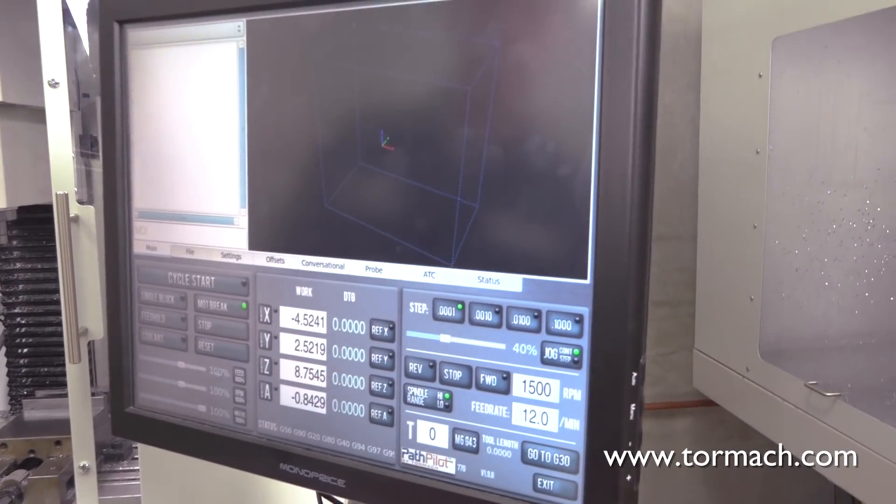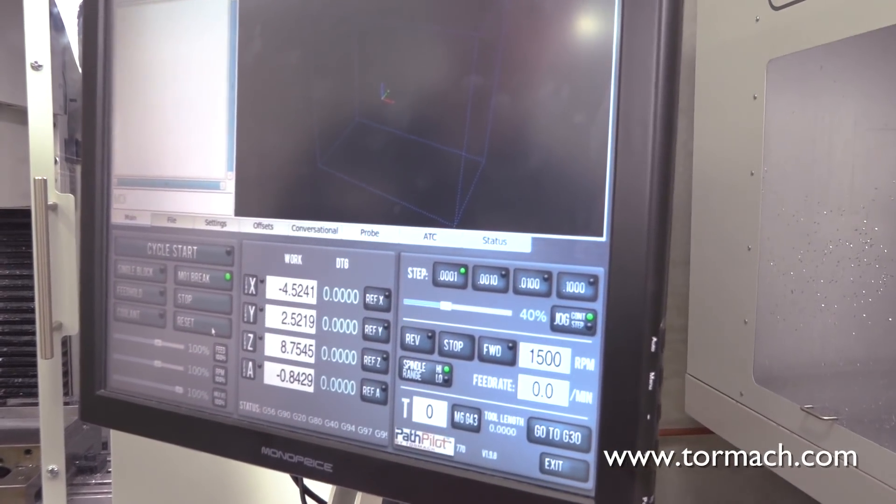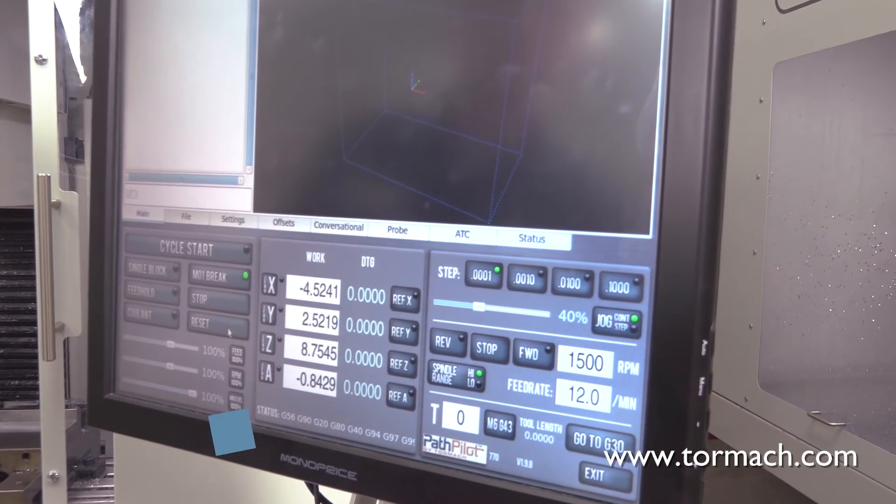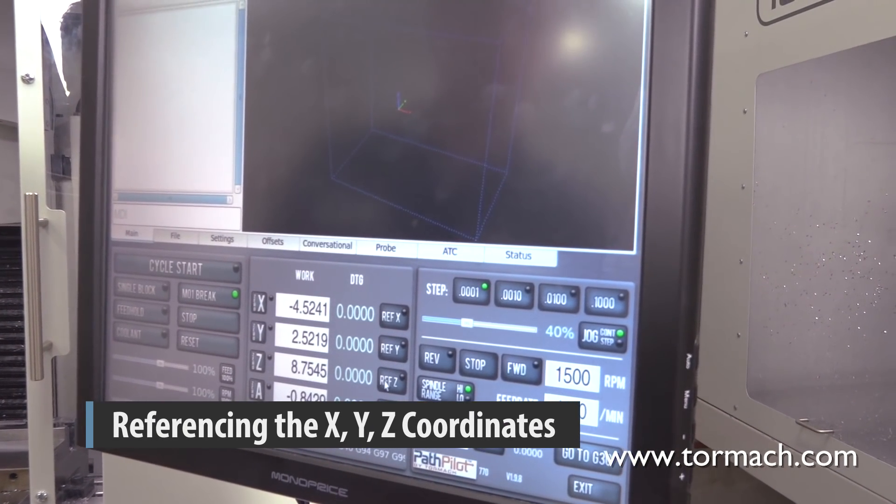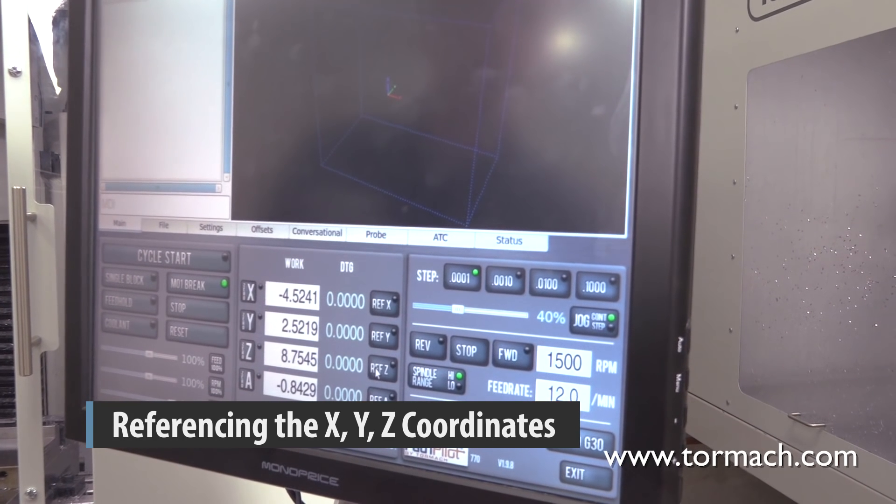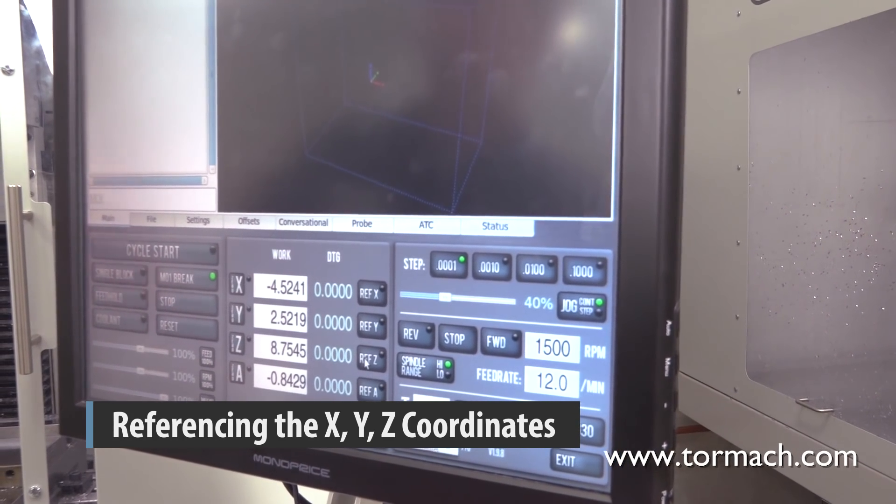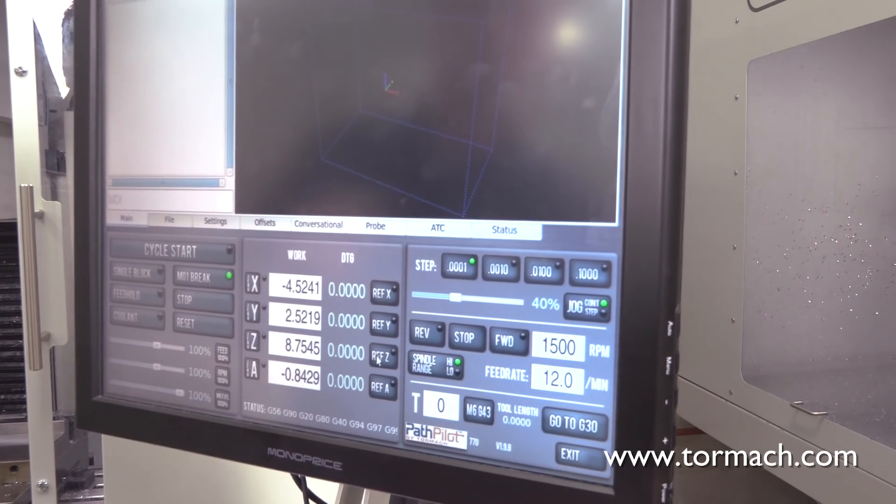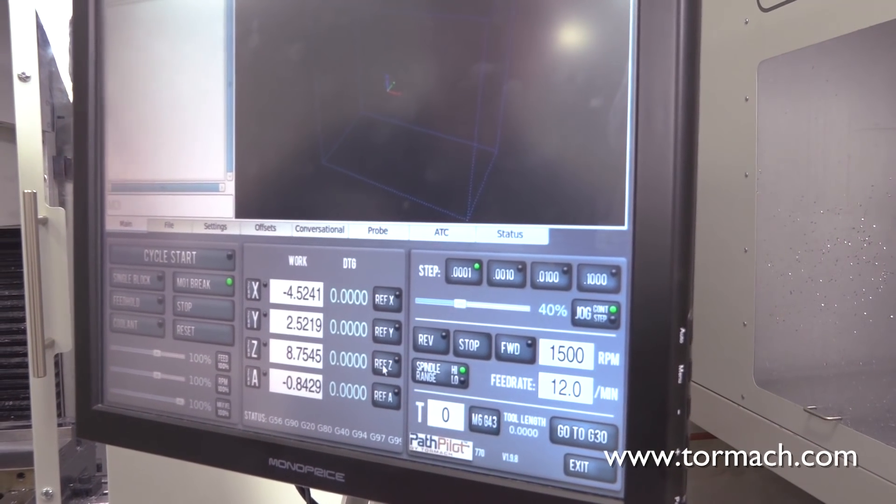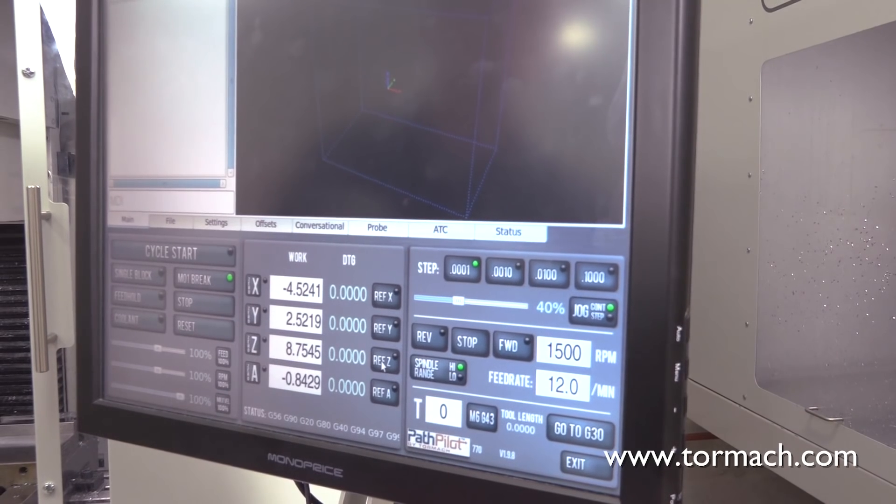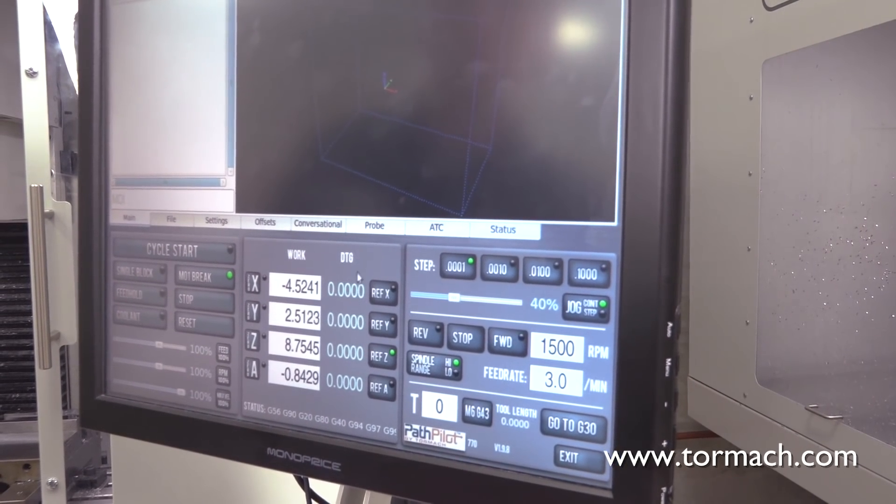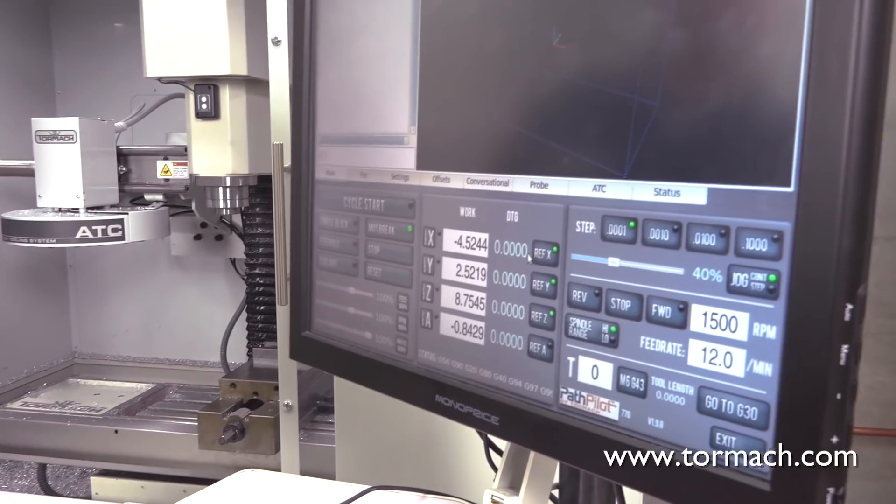We see this flashing reset button, we're going to go ahead and click that. And that establishes communication with the machine. It's always a good idea to get in the habit of referencing the machine right after you bring it out of e-stop. Anytime you've e-stopped the machine, the drives are depowered and they're going to forget where they were. So you're going to want to go ahead and reference it back to its home switches. We can go ahead and reference X, Y, and Z there.